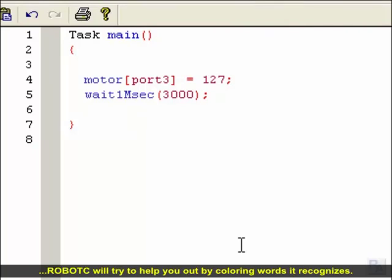Note that as you type, Robot C will try to help you out by coloring words it recognizes. If a word highlights in a different color, it means Robot C knows it as an important word in the programming language.